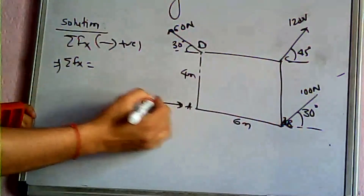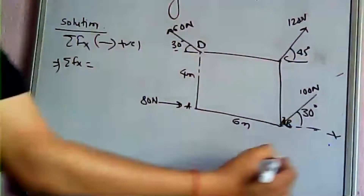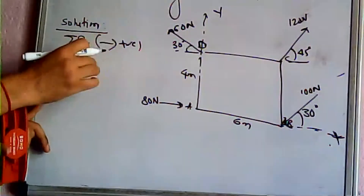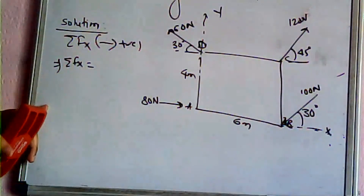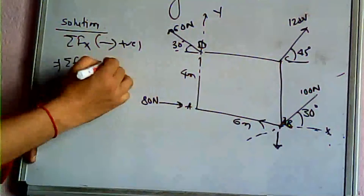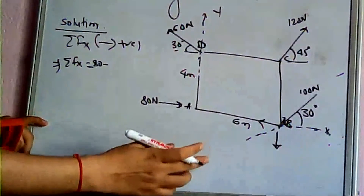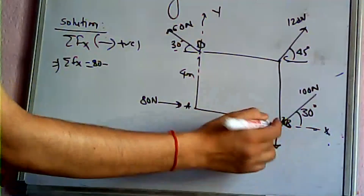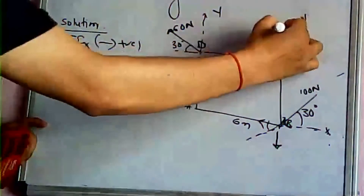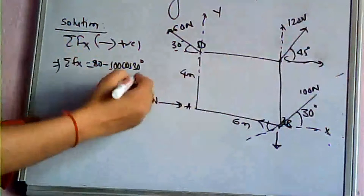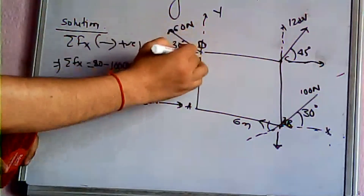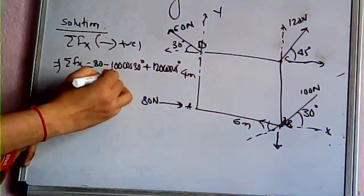Sign convention: rightward is positive for x-direction, and upward is positive for y-direction; opposite directions are negative. So for ΣFx, rightward forces are positive. There is an 80 newton force. The force components involve angles: 30 degrees, and 100 cos 30 degree, 120 cos 45 degree, minus 60 cos 40 degree.